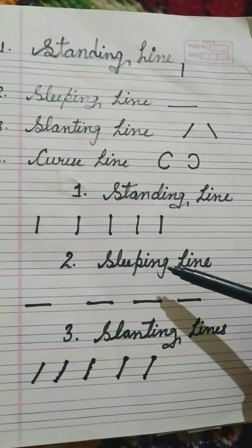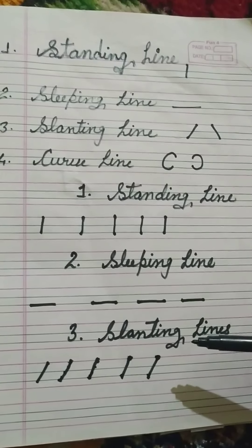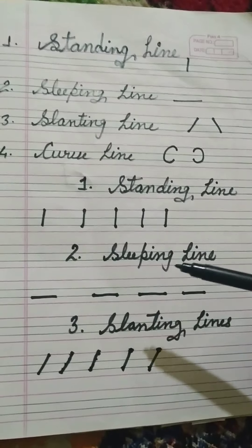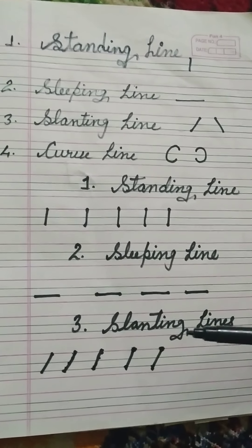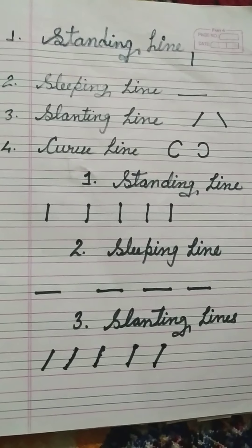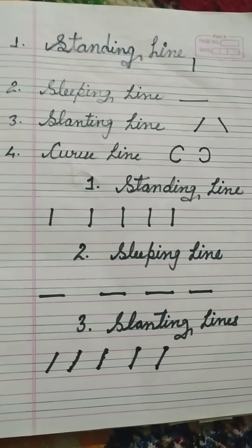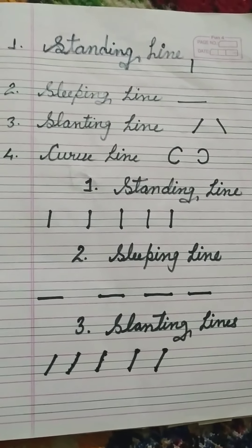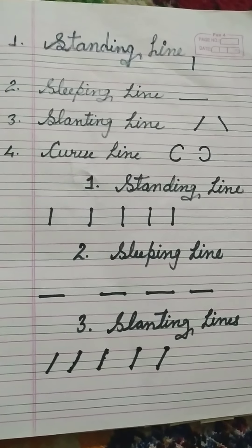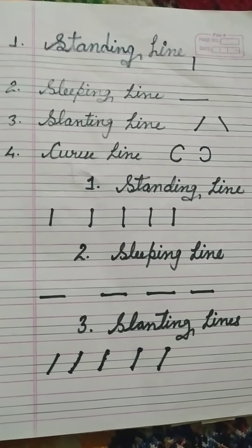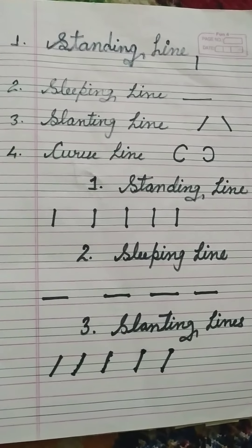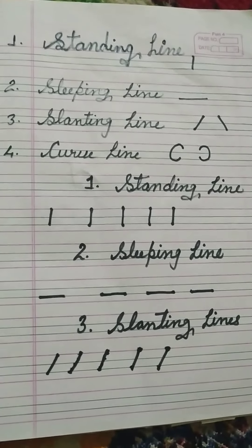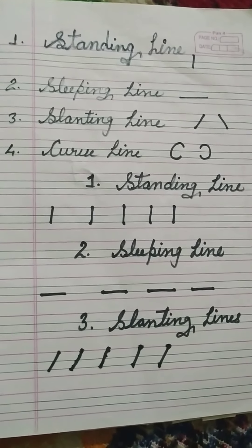We have covered standing line, sleeping line, and slanting line. Related letters we will learn in the next class. After the kids are habitual with writing, they will be able to do freehand. After that I will teach curve line, and then related letters. In the next class I will show some letters related to standing line, sleeping line, and slanting line.